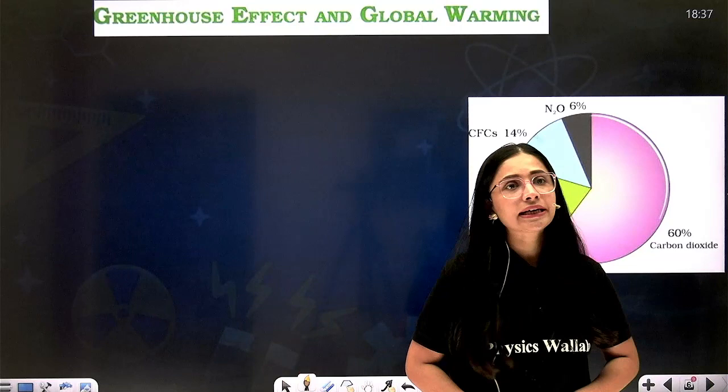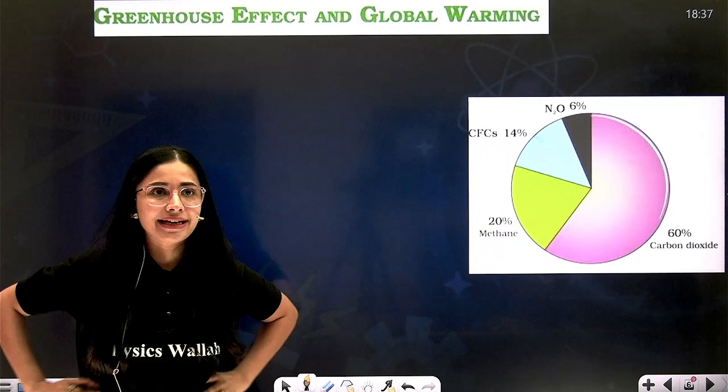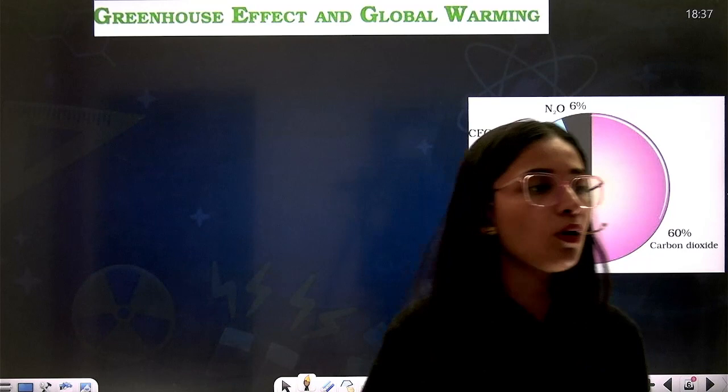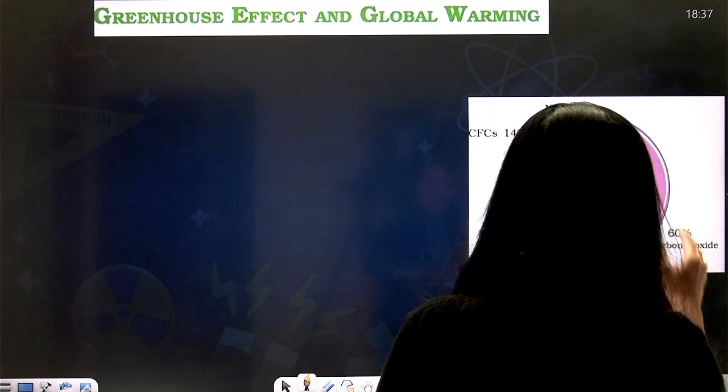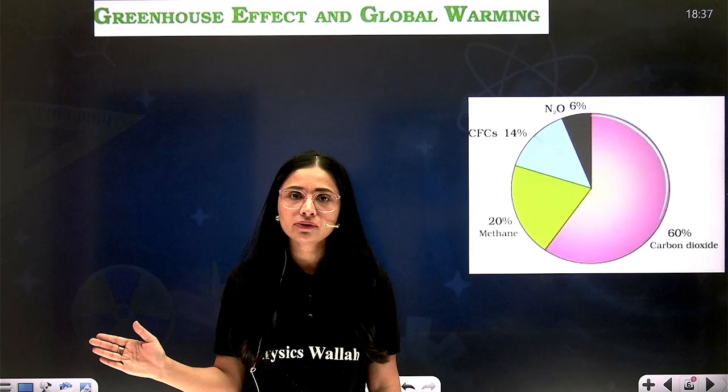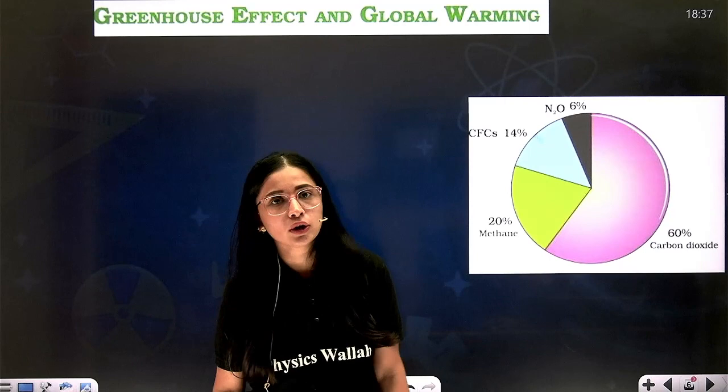Another problem associated with today's world, even bigger than different types of pollution, is global warming. Global warming is actually a result of pollution. Before we discuss global warming, we need to understand the greenhouse effect. The greenhouse effect is good — the earth has an atmosphere, and sun radiations are able to penetrate through it.